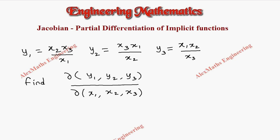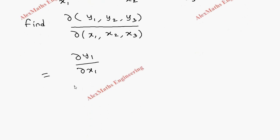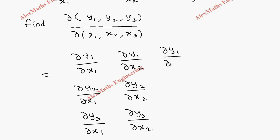We are going to use a determinant. The first element is ∂y1/∂x1, then below ∂y2/∂x1, then ∂y3/∂x1. The second column has ∂y1/∂x2, ∂y2/∂x2. The third column has ∂y1/∂x3, ∂y2/∂x3, and ∂y3/∂x3. This is the determinant we have to evaluate.